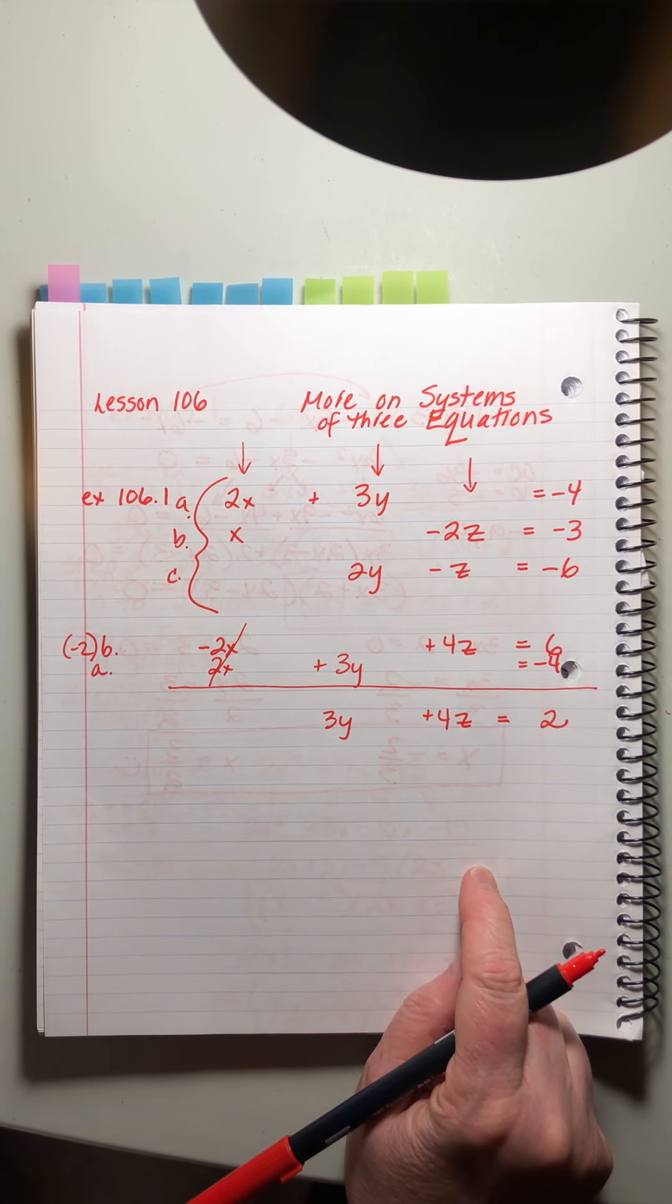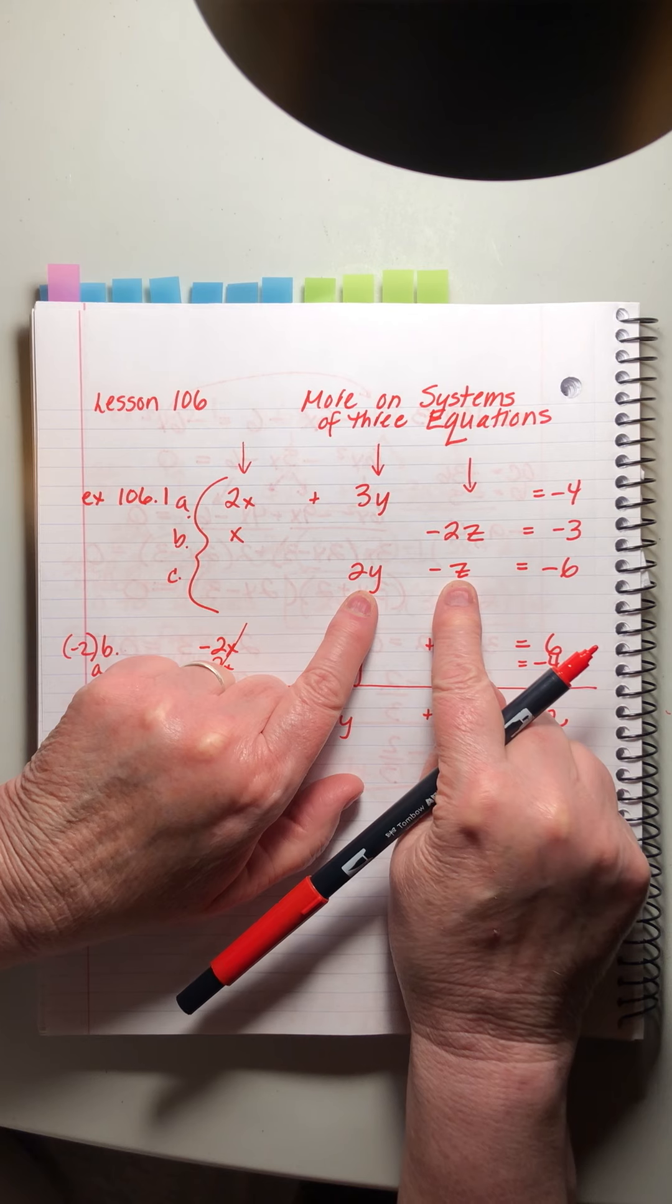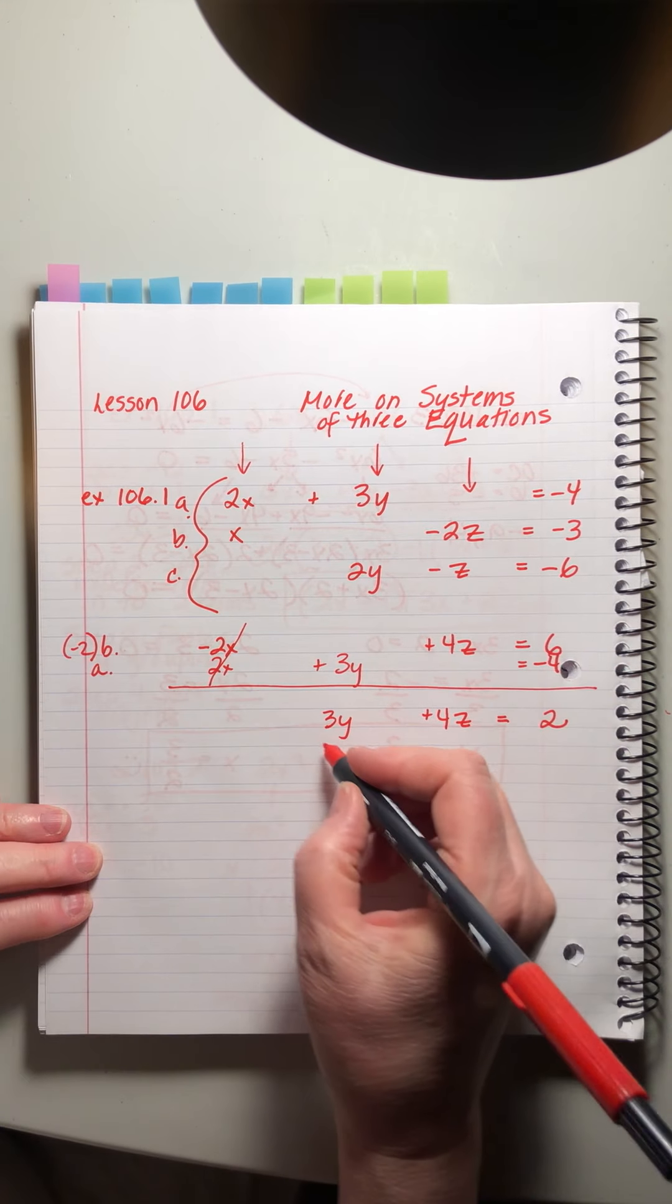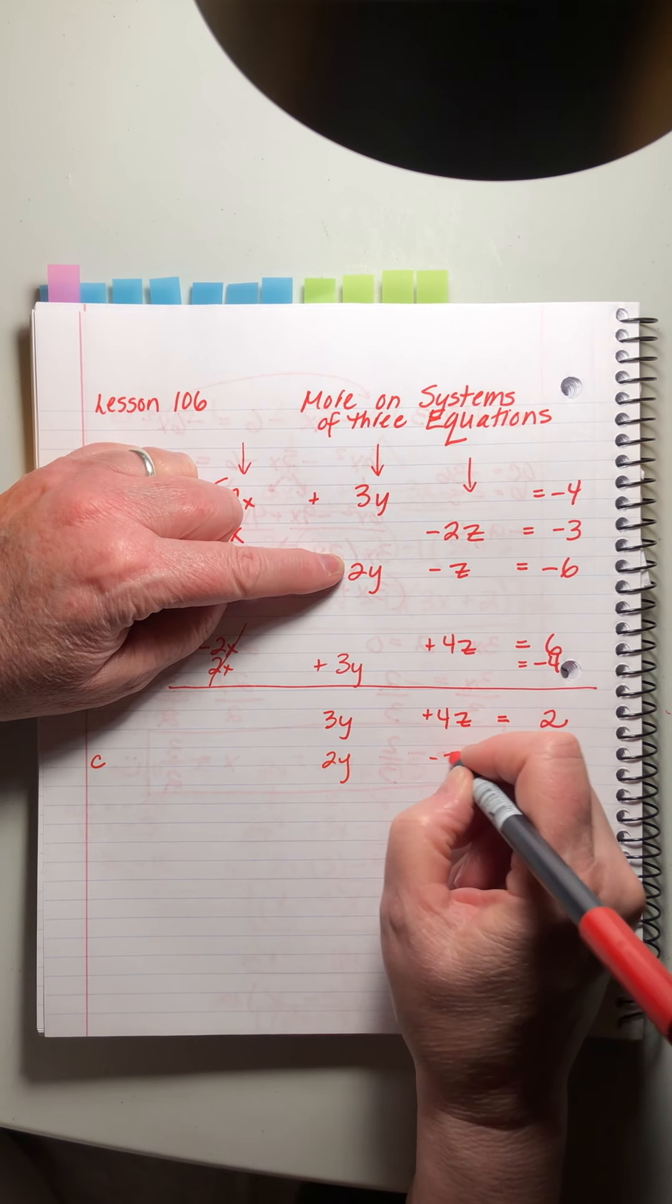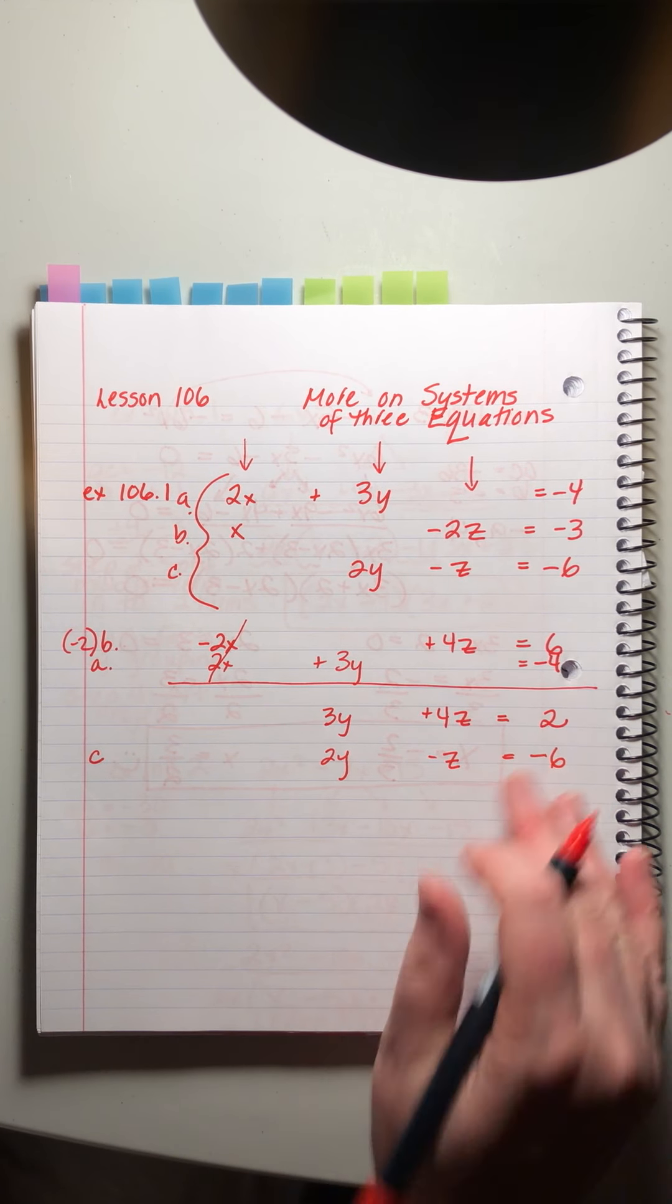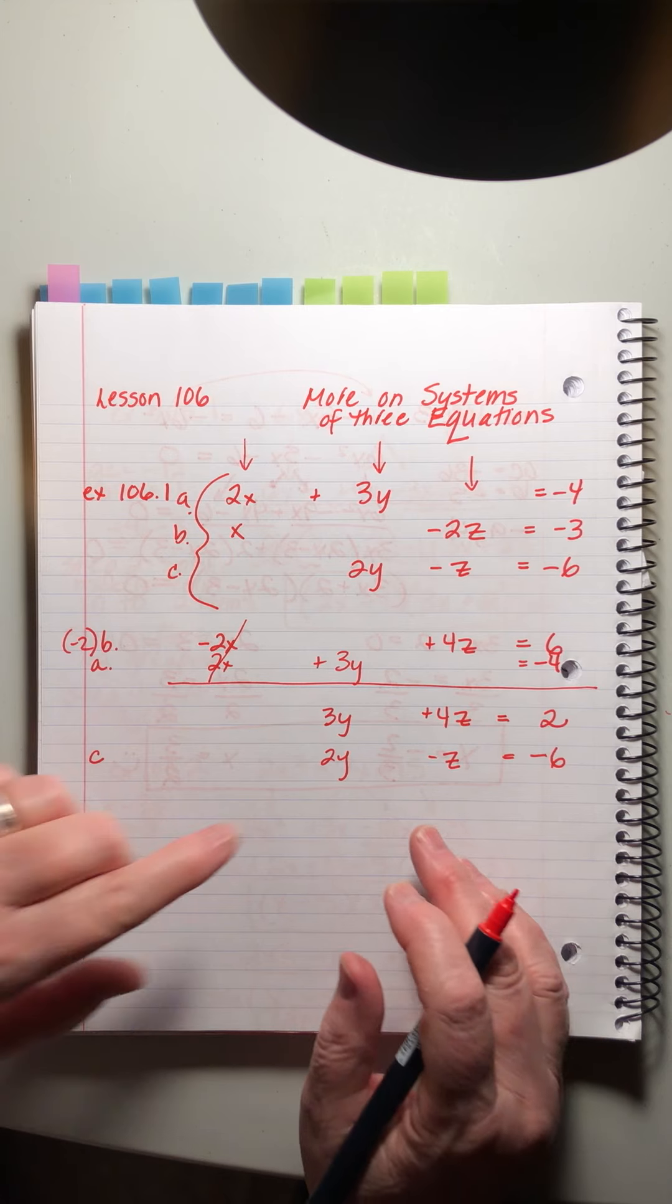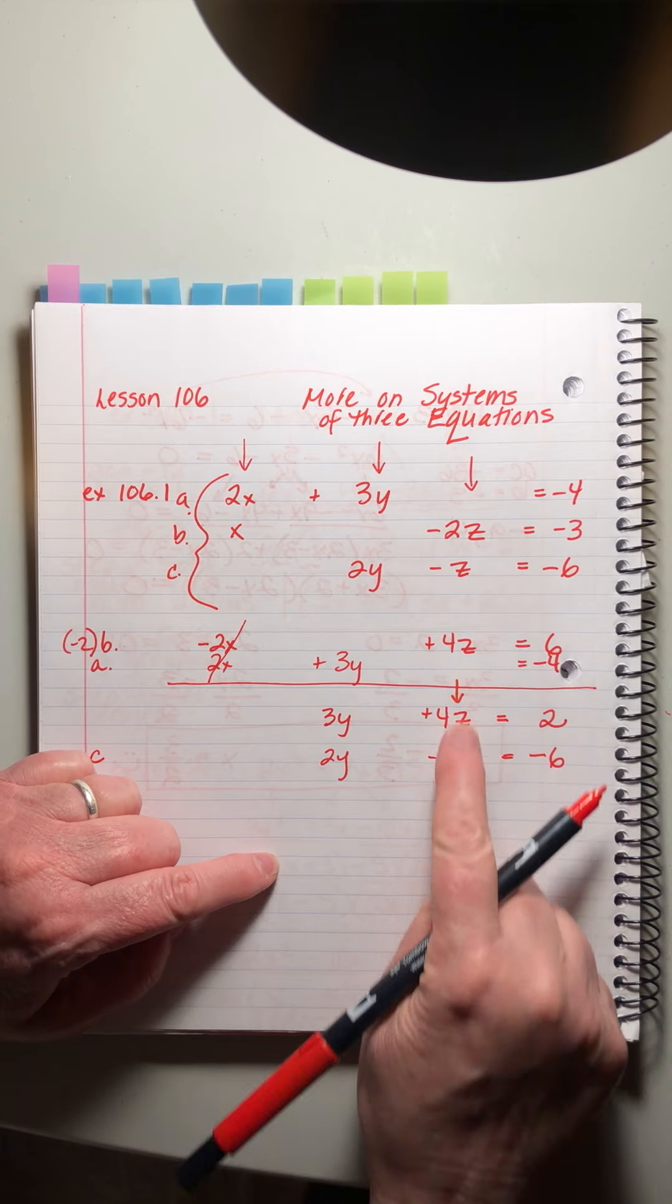Now look what we did. We created a y and a z and then a plain number. Look what we have left in C. A y and a z and a plain number. They match. So now what we're going to do is we're going to add this to C. 2y minus z equals minus 6. We're going to combine these two because now we're just down to 2. So we're just doing basic elimination. Let's cancel the z's here because we've already got the plus minus. So we'll just multiply this one C times 4.